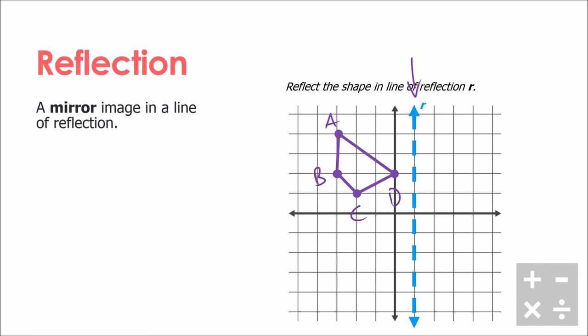I can see that A is one, two, three, four units away. I'm gonna put a little four there. That means that A prime has to also be four units away, but it has to be going the other direction from line R. So I go one, two, three, four. That's four units, and that's exactly where my point A prime is going to go.